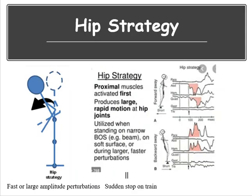The hip strategy is more for fast or large amplitude perturbations — somebody bumps into you or a sudden stop on a train. The proximal muscles activate first and they produce large, rapid motions at the hip. If you're going forward abruptly, you're going to have your abdominals followed by your quadriceps trying to flex your hip. You're essentially hinging at your hip, redistributing your upper body to regain balance.